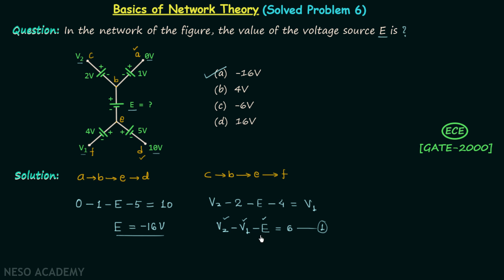And here you can see that we have three unknowns in one equation. Therefore we cannot find the value of E, so it is important to find the values of V1 and V2. We can find the value of V1 if we follow the path F, E,